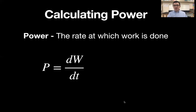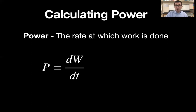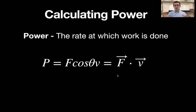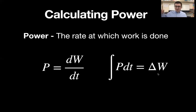One more idea: if the derivative of work with respect to time is power, then we can find the change in work by integrating power with respect to time. It just depends on which direction the problem takes you. Also noteworthy: since force equals mass times acceleration, and acceleration is the second derivative of displacement, you could end up with power expressed as mass times the second derivative of displacement times the first derivative of displacement — an unusual case of multiplying a second derivative by a first derivative. And remember, derivatives and antiderivatives let you move back and forth between work and power.